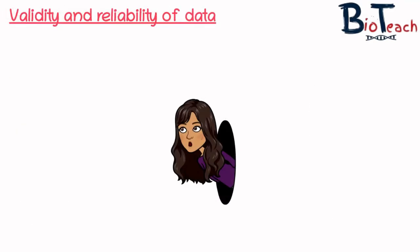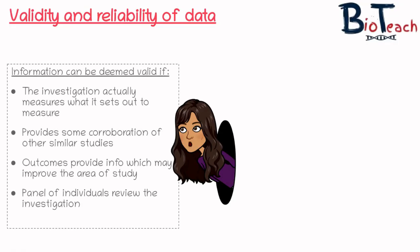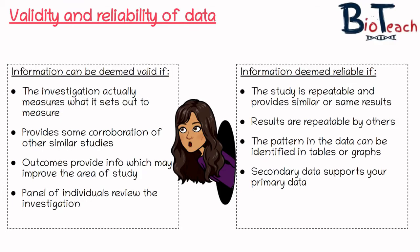So let's look at how we can deem information to be valid or reliable. Information in your article can be deemed valid if the investigation actually measures what it set out to measure. If the study provides corroboration of other similar studies with similar findings, that's also deemed valid. If the outcomes may improve the area of study, that's also valid. If a panel of individuals has reviewed the investigation, or the study has been peer-reviewed before publication, then that's something you can use to support your argument. Information can be deemed reliable if the study is repeatable and provides similar or the same results — that goes hand in hand with validity through corroboration of similar studies.